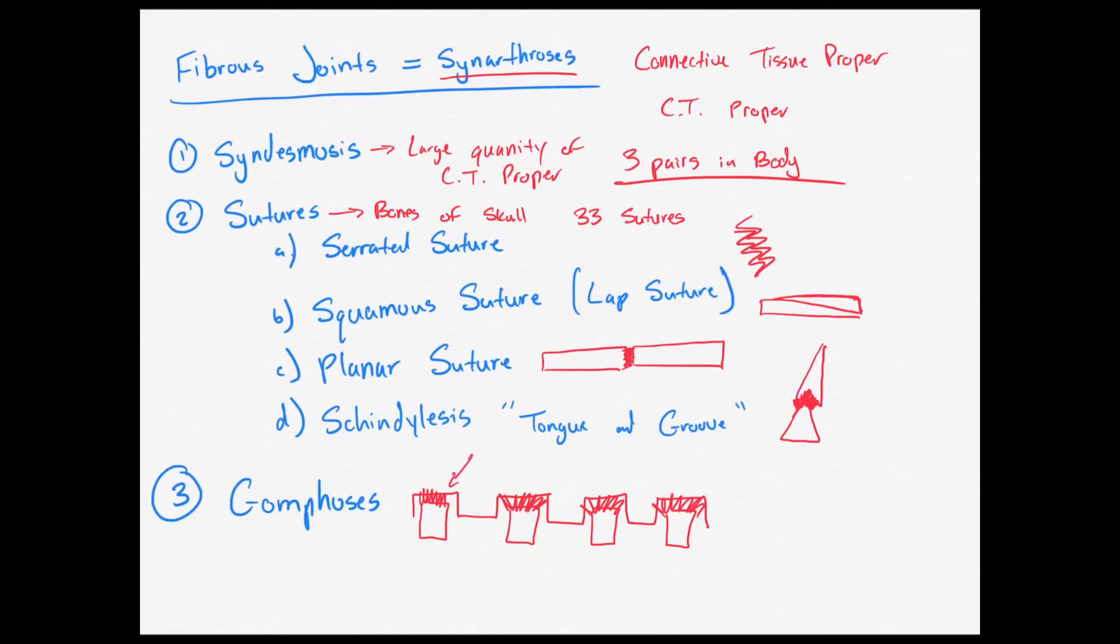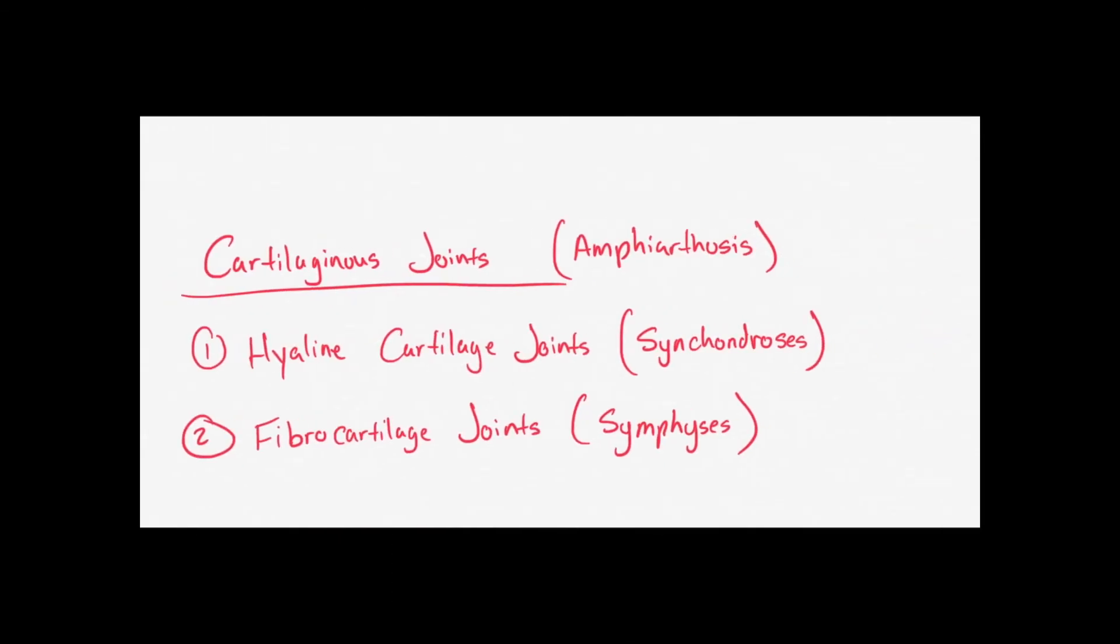And those are all the different types of fibrous joints. Now we can go ahead and move along to cartilaginous joints. Like the name suggests, cartilaginous joints are held together by cartilage, and there are two types of cartilages that form these joints.